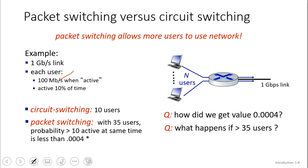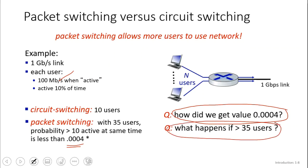It will be your homework to understand how we get the probability of 0.004. With 35 users, the probability of having more than 10 users active at the same time is 0.004. What happens if the number of users is greater than 35?